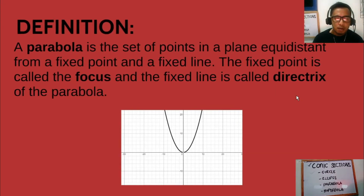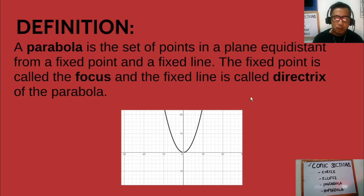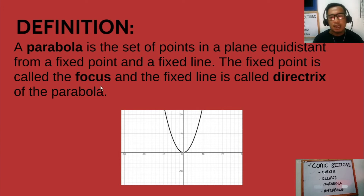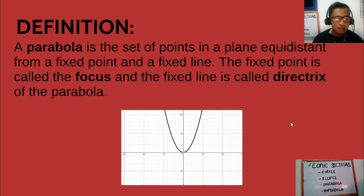A parabola is the set of points in a plane equidistant from a fixed point and a fixed line. The fixed point is called the focus and the fixed line is called the directrix of the parabola.